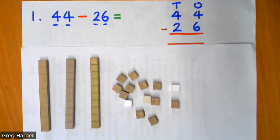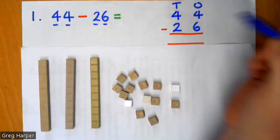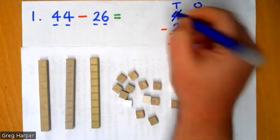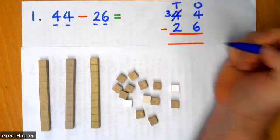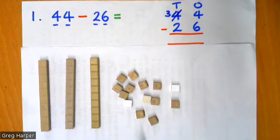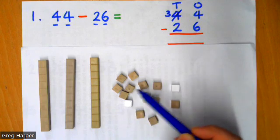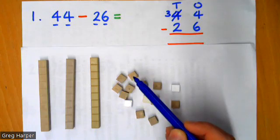Now, what I've done is I've changed my sum ever so slightly. Instead of having four tens, I've taken one ten away. So I only have three left. And now instead of having four ones, I have lots more. So let's have a quick count. One, two, three, four, five, six, seven, eight, nine, ten, eleven, twelve, thirteen, fourteen.